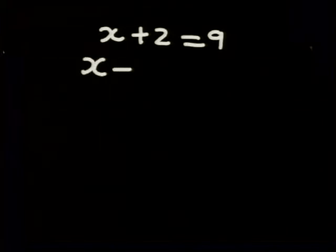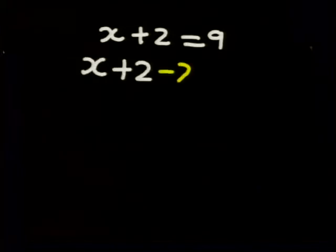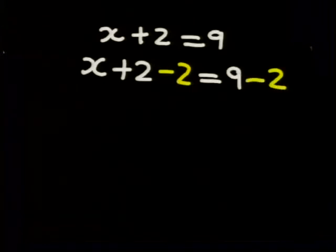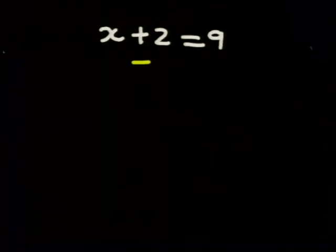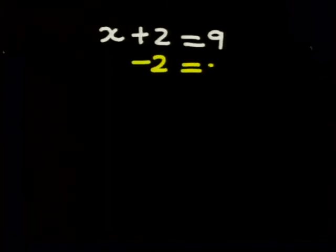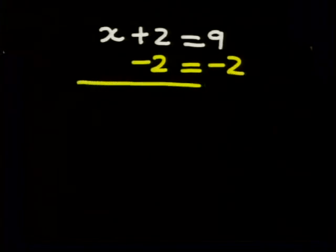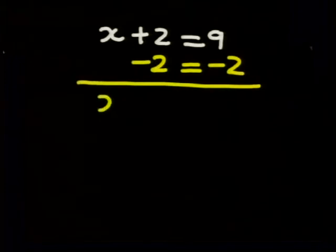I can write that step a little differently like this. x minus 2 is equal to minus 2. Do you see that I've made two equations? And if I add them together, I get x is equal to 7.